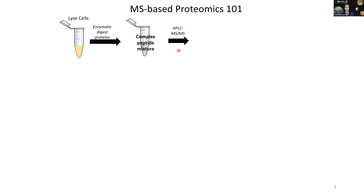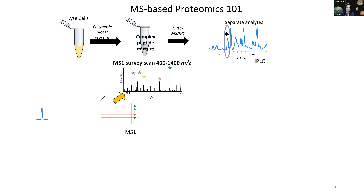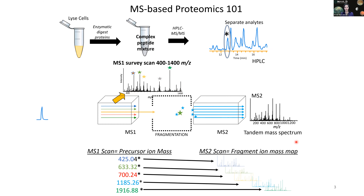We separate those peptides on an HPLC attached to a tandem mass spectrometer. Focusing on an individual time point, ions enter the first mass spectrometer yielding a mass-to-charge spectrum of all ions present — roughly 400 to 1400 — giving you a survey scan. Using data-dependent ion selection, we take the top most abundant ions, isolate them in the first chamber, fragment them, and perform a secondary scan in the second mass spec, generating a tandem mass spectrum — the fragment ion mass map.